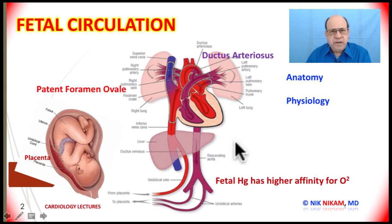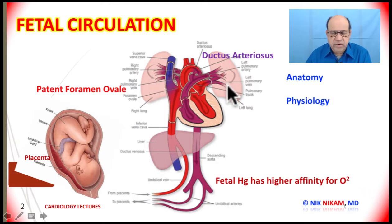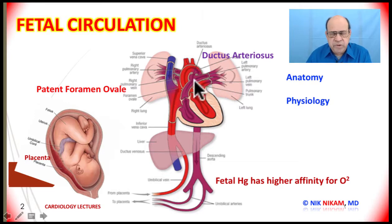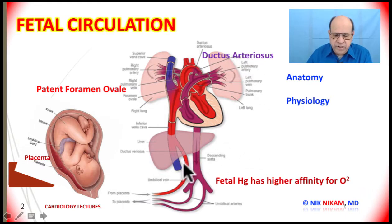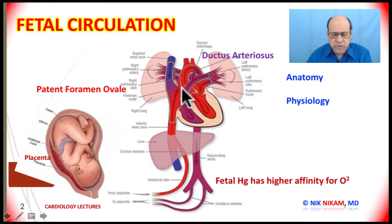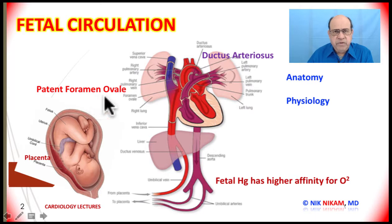There are two important shunts. Since the lungs are not functioning in the fetus, the lungs have to be bypassed. In order to do that, there is a connection between the pulmonary artery and the descending thoracic aorta by the ductus arteriosus. Similarly, there is a shunting of oxygenated blood through the right side of the heart to the left side through an opening in the atrium known as the foramen ovale.